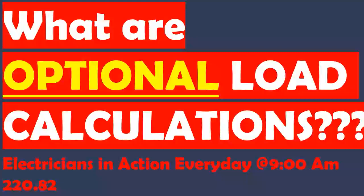Most inspectors — all of the ones I know personally — if they require you to do a load calculation, they're going to want you to use the standard method because that gives them a more accurate perception of what the load demand is really going to be. But the reason people love doing optional method load calculations out in the field is because it's easy. We take the nameplate of everything, we take the square foot, we apply one demand factor, and then we add the heating and cooling, and we're done.